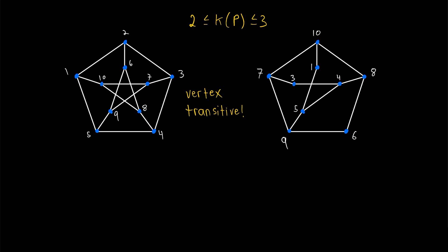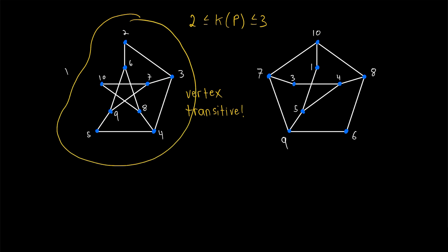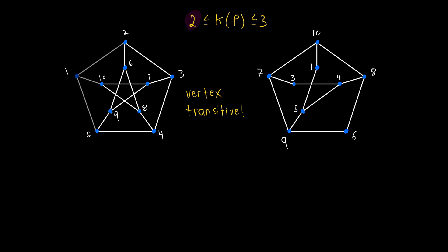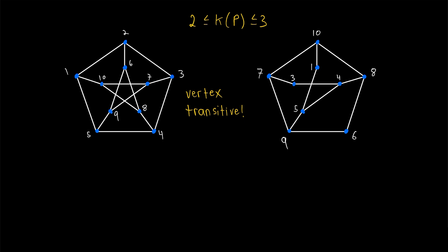Since deleting one vertex always leaves behind the same graph structurally, we can just delete one vertex — say vertex one — and then try deleting each of the remaining vertices in the new graph to verify that the graph remains connected no matter which of these vertices we delete. This verifies that deleting two vertices is not sufficient to disconnect the Petersen graph. Because deleting any one vertex leaves the same graph behind, and that remaining graph still can't be disconnected by deleting a single vertex, clearly deleting two vertices from the Petersen graph will not disconnect it. So the vertex connectivity has to be greater than two, which means it's greater than or equal to three. Thus, we've verified that the vertex connectivity of the Petersen graph is equal to three.